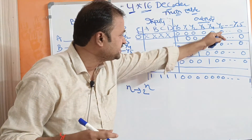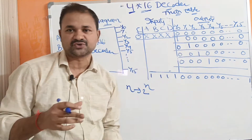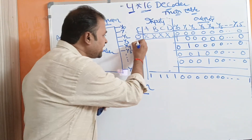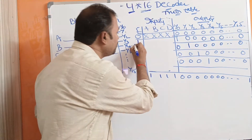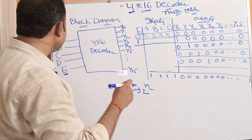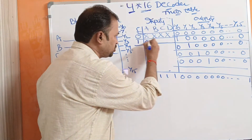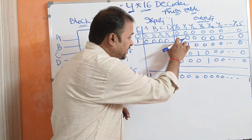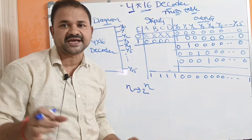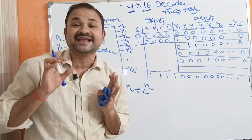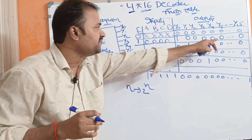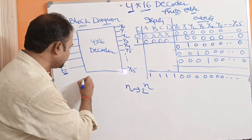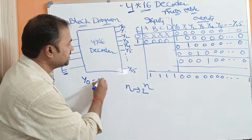When enable is 0, Y0 through Y15 are all 0s. If the enable input is 1, then only it produces the output. Let the input combination be 0, 0, 0, 0. If the inputs are 0000, then the first output line, Y0, will become active, whereas the remaining outputs are inactive. So Y0 is 1, whereas the remaining are 0s. Y0 corresponds to all 0s, meaning A-bar, B-bar, C-bar, D-bar.